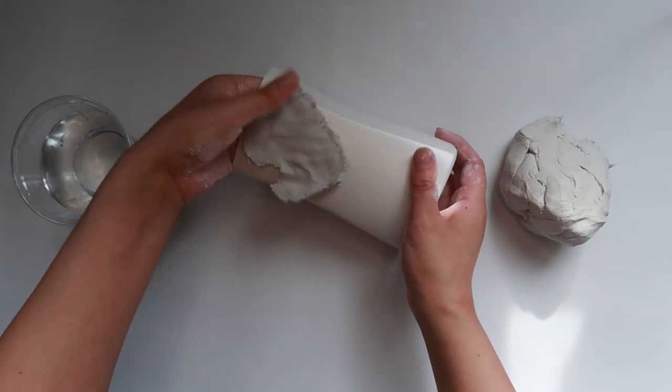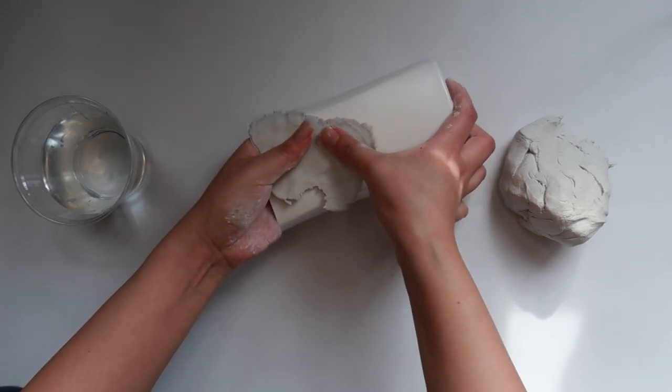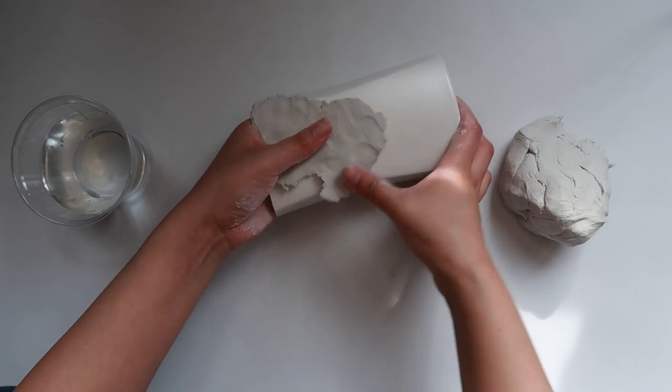Make sure to do the whole bottle like this and I did everything but the bottom. And if your clay starts to get a little dry while you're doing this, just add water to your clay and it'll add moisture back into it.